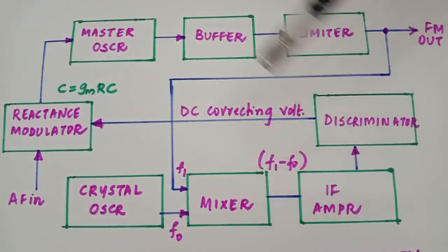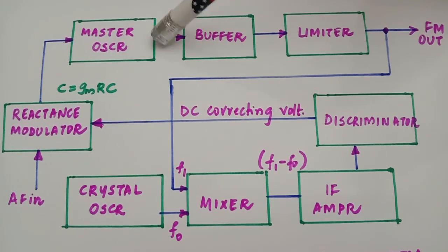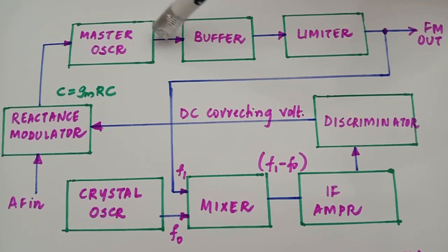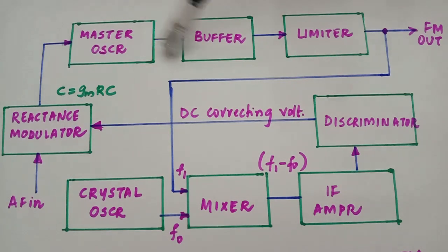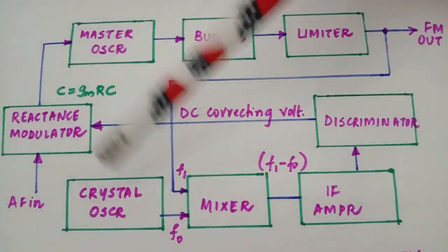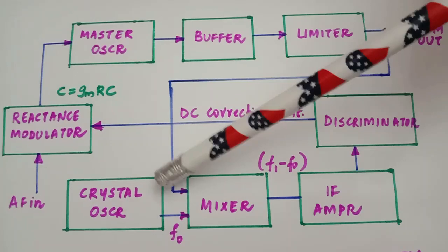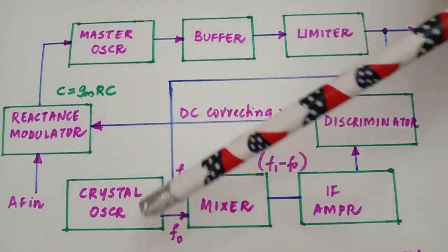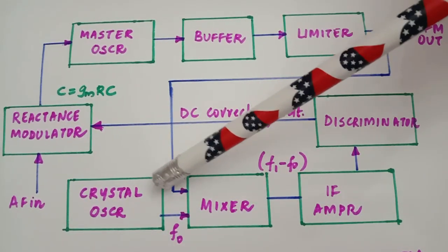Now we look at the AFC section added to this modulator circuit. When we use an LC oscillator, there are chances that the carrier frequency may drift — sometimes it may become larger than what we have fixed, sometimes lesser. The reason for these frequency drifts is that the values of the LC components may vary with temperature or with time. To correct this drift, we use the automatic frequency control circuit.